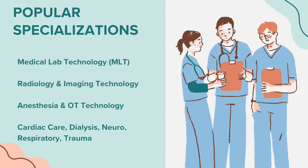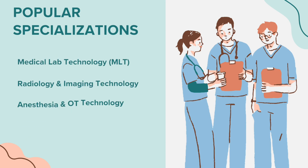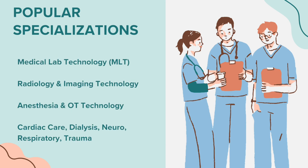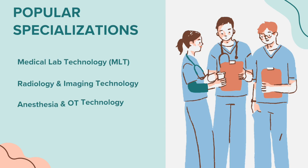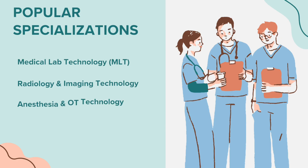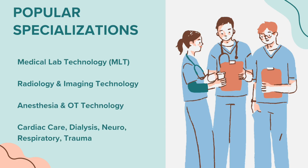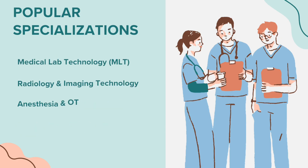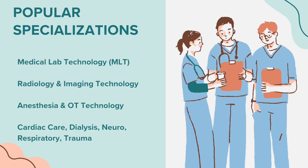Let's look at common specializations under BSc Allied Health Sciences. The first is Medical Laboratory Technology, where you work in a pathology lab diagnosing diseases through blood or tissue tests. Next is Radiology and Imaging Technology, which involves operating CT, MRI, X-ray, and other scanning equipment. Anesthesia and OT Technology involves assisting anesthesiologists and managing OT equipment. Perfusion Technology operates the heart-lung machine during cardiac surgeries.